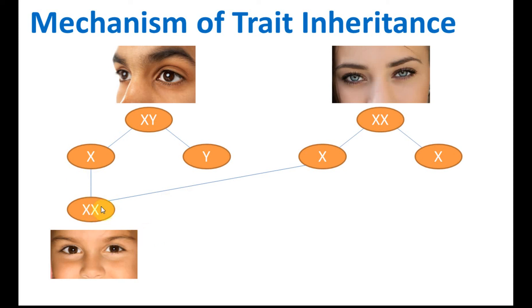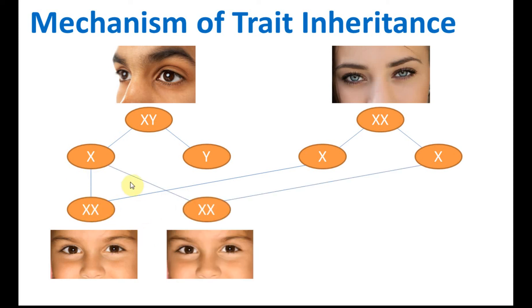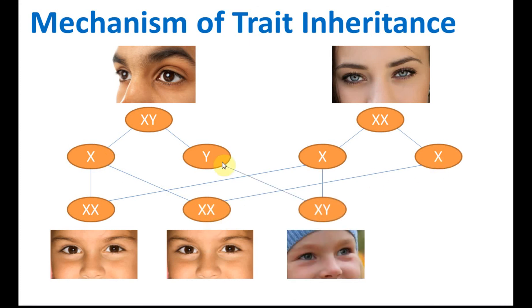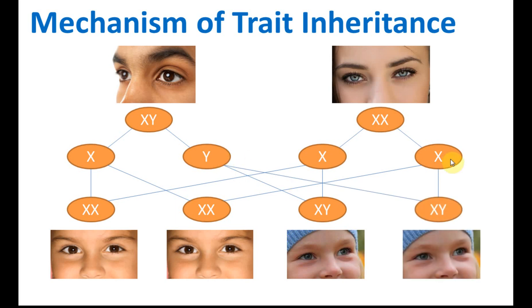During reproduction, if this one combines with this one — both X — then we get a girl. This one with this one, still XX, we get a girl. Then this Y with this X, we get XY, and we get a boy. And this one with this one, we get XY and we get a boy. So the chance to get girls and the chance to get boys are the same — 50% boy and 50% girl.